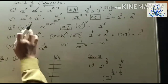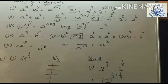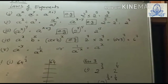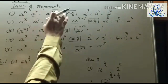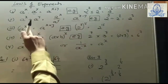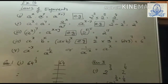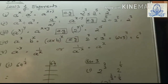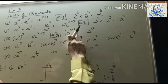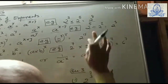Rule 3: (a^x)^y — power of a power. We multiply the exponents. To summarize: for multiplication, add the exponents; for division, subtract the exponents; for power of a power, multiply the exponents. For example, (2³)⁵ — multiply the exponents to get 2¹⁵.